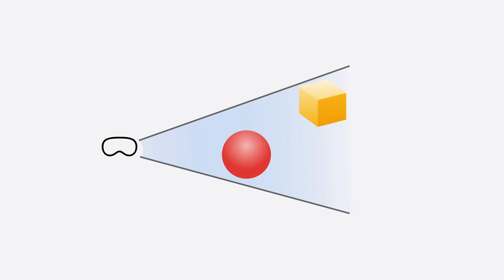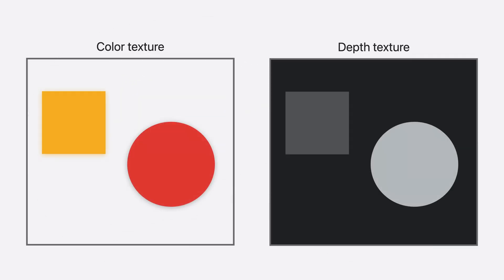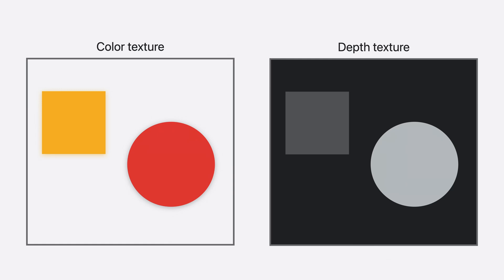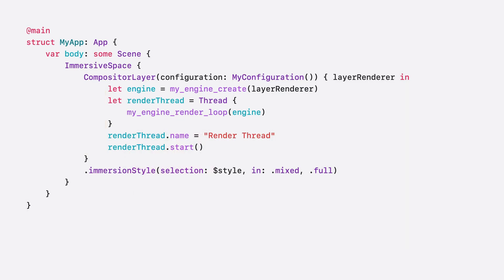Let's dive into exactly how this works. Imagine the person wearing the headset is in mixed immersion style. There are two rendered objects in the scene — the red circle and the yellow cube — and the person's hands are also within the field of view. After rendering the scene, this is how the drawable depth and color texture would look. From the Compositor Services API, the expected depth texture from a renderer is in reverse Z values. If you have designated automatic for upper limb visibility, Compositor Services will use the depth values you have set for the texture to determine if the hand should be fully visible because it's in front of the object, or partially hidden if it's behind or within the object. In code, using upper limb visibility, you let the system know which mode your app is requesting — here, automatic mode is requested.